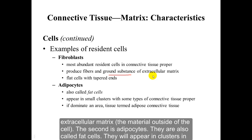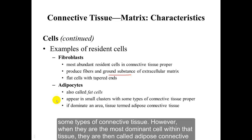The second resident cell type is adipocytes, also called fat cells. They appear in clusters in some types of connective tissue. When they are the most dominant cell within that tissue, they are called adipose connective tissue.